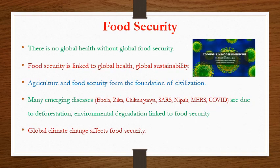Food security is one of the reasons for all this. There is no global health without global food security. Food security is linked to global health and global sustainability, and agriculture and food security form the foundation of civilization. Many emerging diseases like Ebola, Zika, Chikungunya, SARS, Nipah, MERS, COVID — all are mainly due to deforestation and environmental degradation, which are related to food security. Global climate change is also affecting food security, and is indirectly linked to the emergence of all these kinds of diseases.